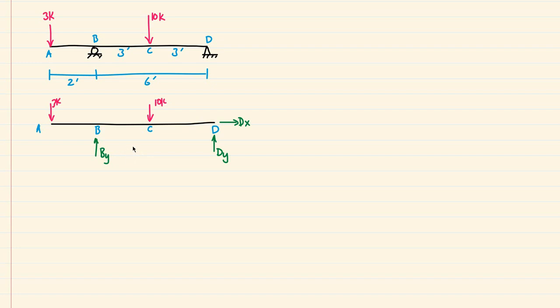Now what we can do is figure out what these unknown reactions are using our static equilibrium equations. The very first one I can do is sum of forces in the X direction is equal to 0. I'm going to say to the right is positive. In the X direction, we only have DX and there's no other force. So DX is automatically equal to 0 kips.